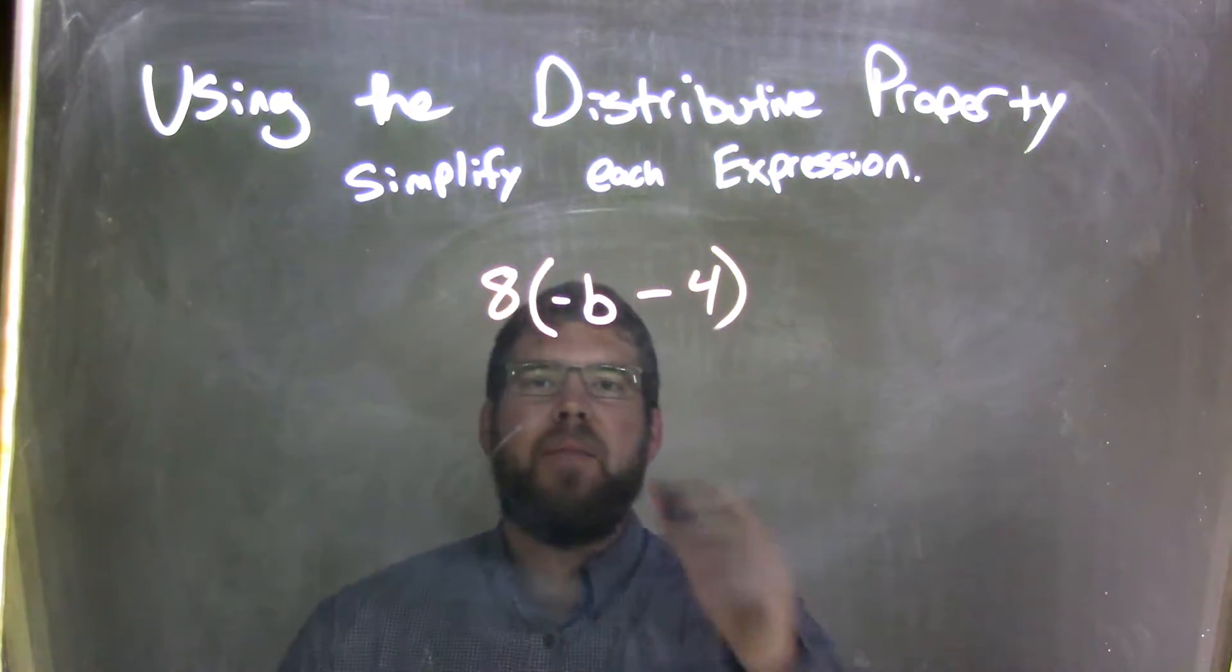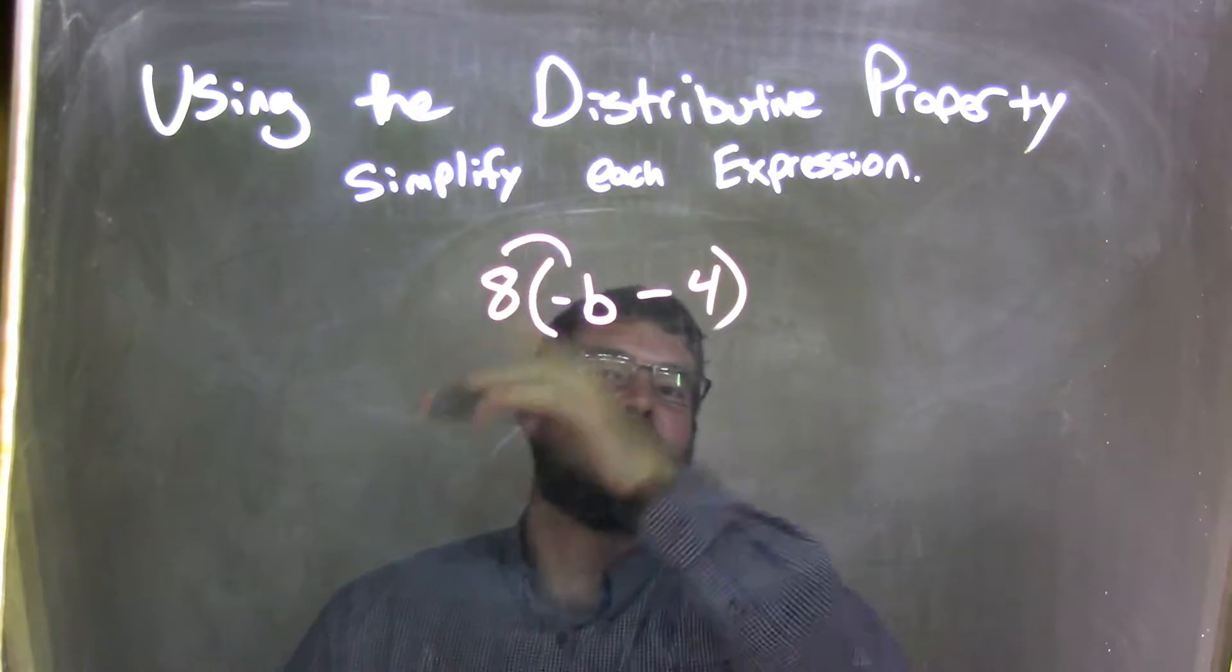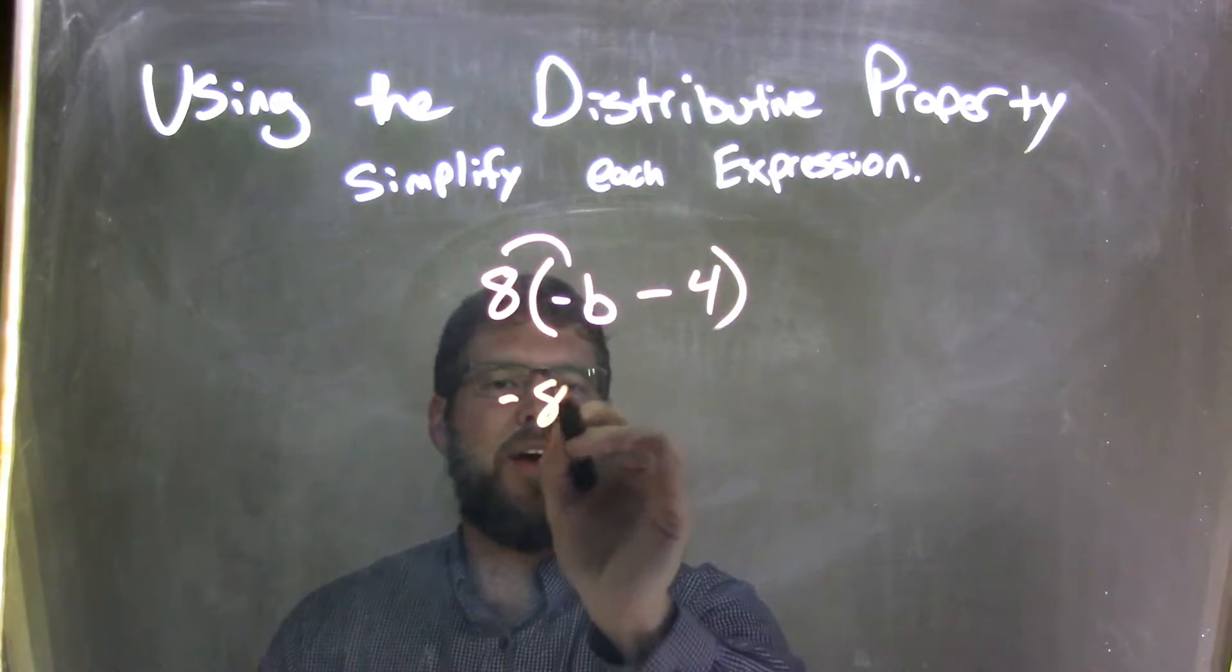Now we have to deal with the outside. 8 times negative b, we need to distribute that in first. 8 times negative b is simple, which is negative 8b.